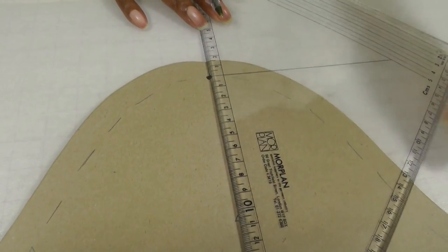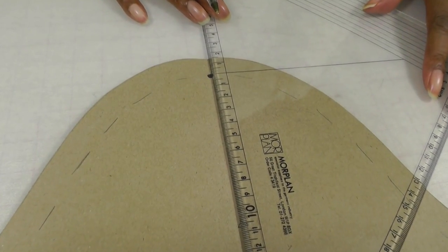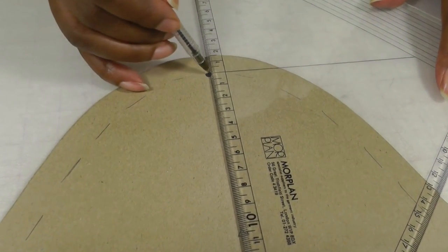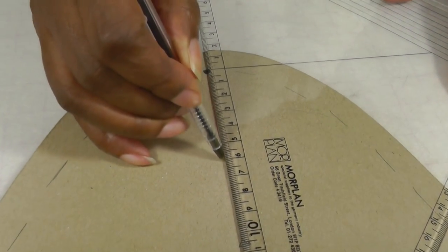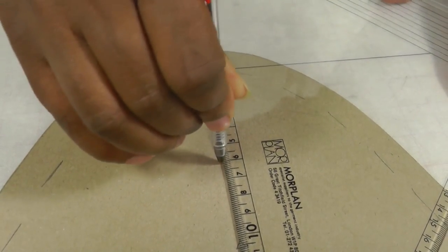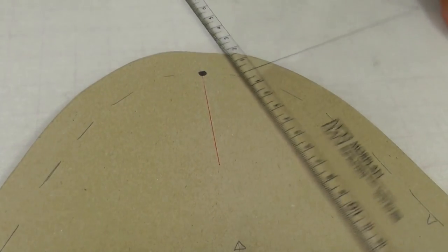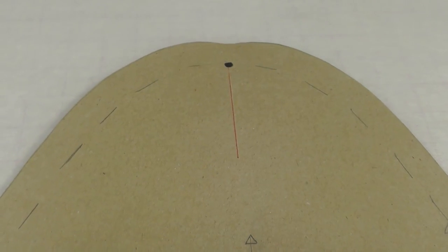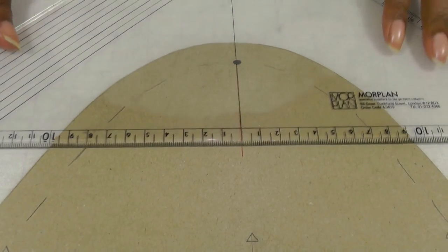So place your ruler like so. You don't necessarily have to draw a line but I'm just doing this for this demonstration, so I'm going to stop roughly about six centimeters and from that point I'm going to draw a line across the sleeve.